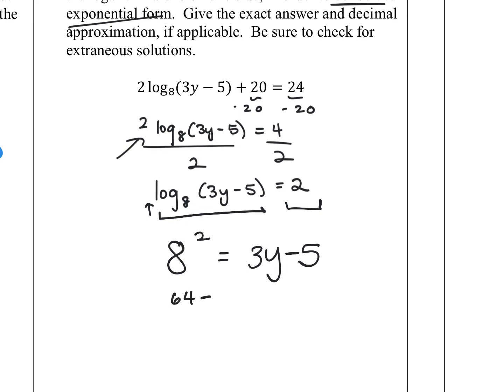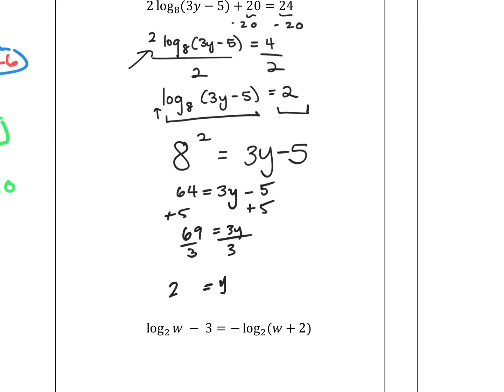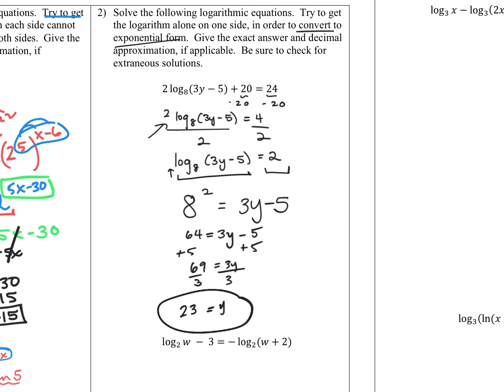So this is really saying 8 squared equals 64, which equals 3y minus 5. Adding 5 to both sides gives 69 equals 3y. Dividing by 3 gives y equals 23. For log equations, we want to make sure the argument is a valid number, so plugging back in: 3 times 23 is 69, minus 5 is 64 — you can take log of 64, so that's fine.